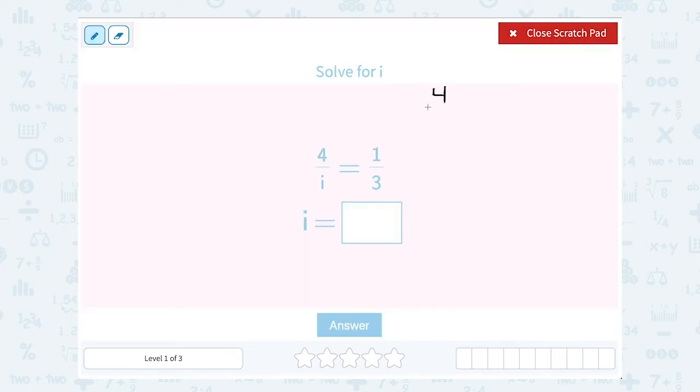To solve our proportion, we want to cross multiply, and that's going to give us an equation we can use to solve for our variable. Remember, cross multiply means we're going to multiply the numbers across from each other.